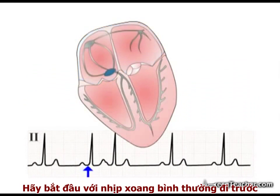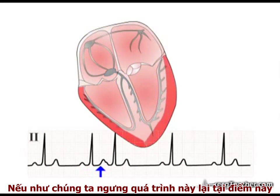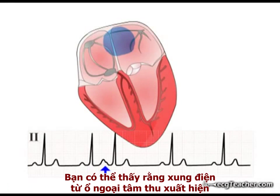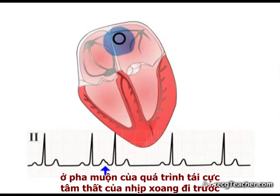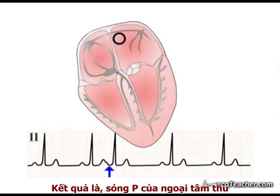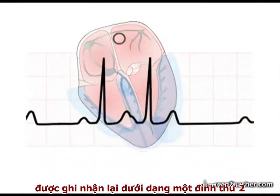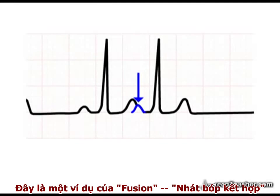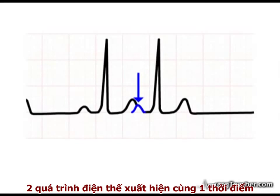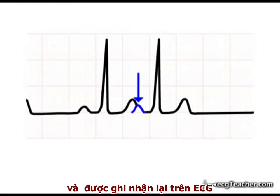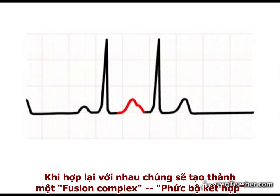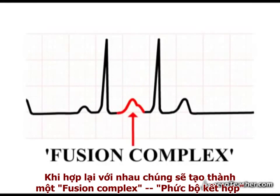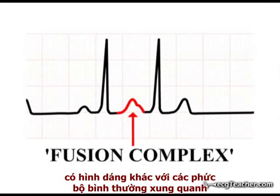Starting with the preceding normal sinus beat, if we freeze events at this point you can see that discharge from the ectopic focus has occurred during the late phase of ventricular repolarization associated with the preceding sinus discharge. Consequently, the ectopic P-wave has been recorded as a small second peak on the preceding T-wave. This is an example of fusion — two electrical events in the heart have occurred at the same time and are recorded by the ECG machine. Their composite effect on the readout produces a fusion complex which differs in morphology from the surrounding normal complexes.